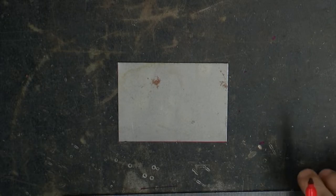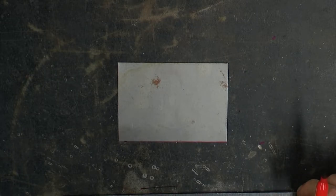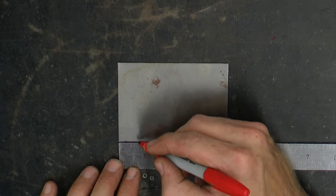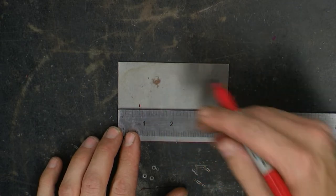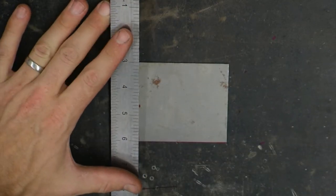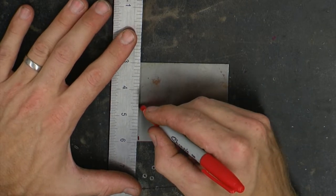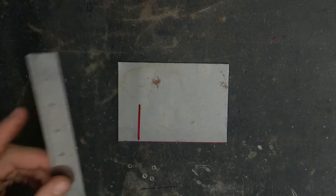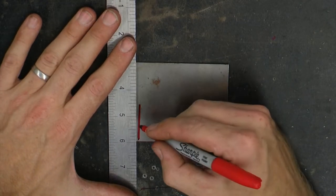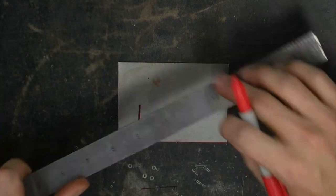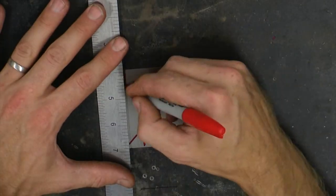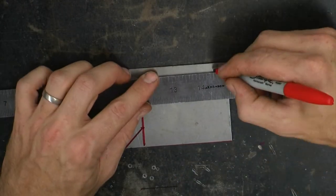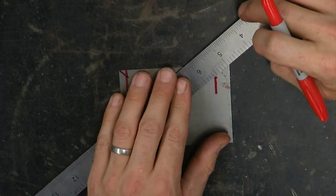Just like we did on the card stock we are going to lay out each of the corners onto our sheet metal. I'll start with my 3/4 inch measurement, creating a few reference lines, measuring up 3/4 of an inch, and connecting that back to the corner. I will continue that for each of the different corner measurements.